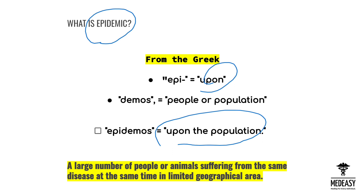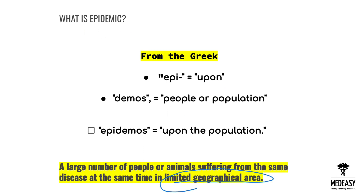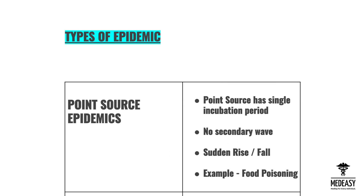at the same time in a limited geographical area. 'Limited geographical area' is a very important phrase, as an epidemic disease does not spread from one continent to another, but is confined to a specific geographical area where a large number of the population is affected by the same disease. There are three types of epidemic.